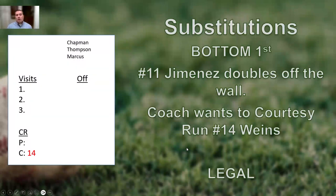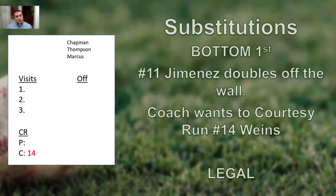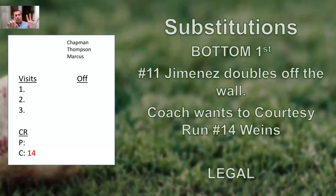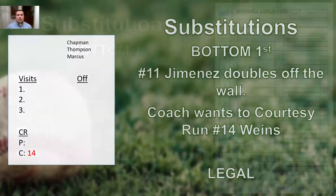If a coach is calling out 'courtesy runner, 14 for 11' — that doesn't help us because we need to know if 11 is the pitcher or the catcher. So if a coach says 'I'm courtesy running 14 for 11,' I will ask: pitcher or catcher? Let them answer. 'Catcher. Thank you. 14 for catcher. Got it.' As a base umpire, you can help speed the game up — if you see a courtesy runner coming in and you can hear clearly, signal to your partner. I'll do a big C for catcher. Help each other out.